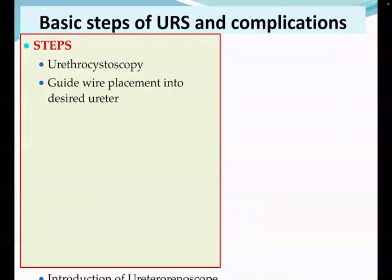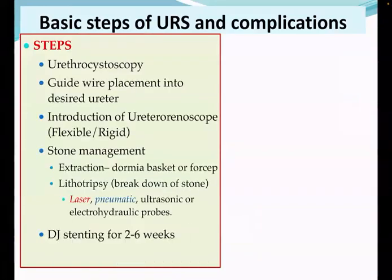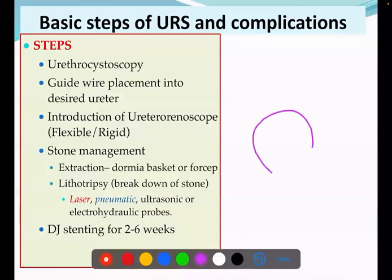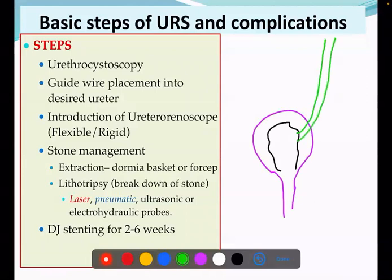The basic steps: under general anesthesia, we first do cystoscopy — we see the bladder. After doing cystoscopy, we pass the guide wire. Whenever we are planning to enter into the ureter, we don't pass the instrument directly as it can cause injury. So first we pass a very thin wire known as a guide wire, and then along with the guide wire, we introduce our instrument.